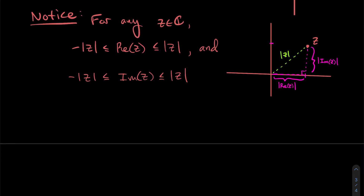Two more useful formulas: z plus its conjugate gives z + z̄ = 2·Re(z), since the imaginary parts cancel. And z minus its conjugate gives z − z̄ = 2i·Im(z), since the real parts cancel. These formulas will be useful as we work toward proving an important result.